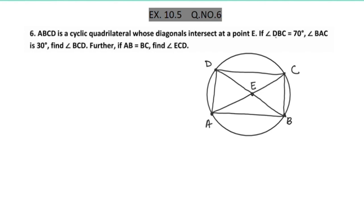Check that if angle DBC is equal to 70 degrees and angle BAC is equal to 30 degrees, find angle BCD.